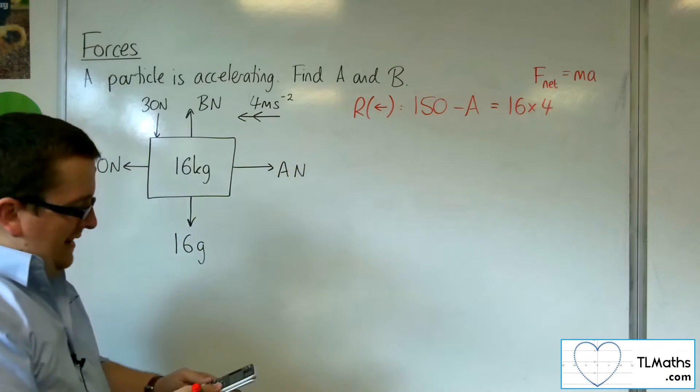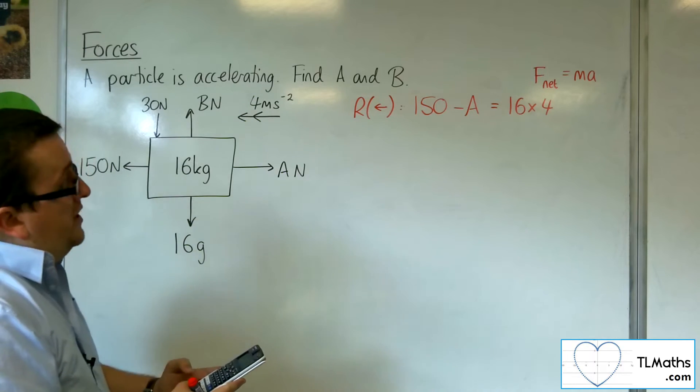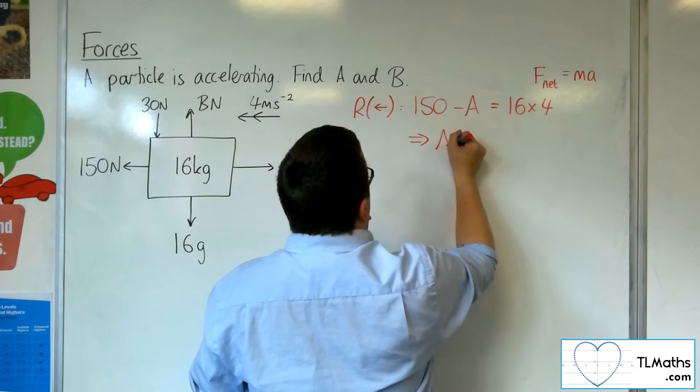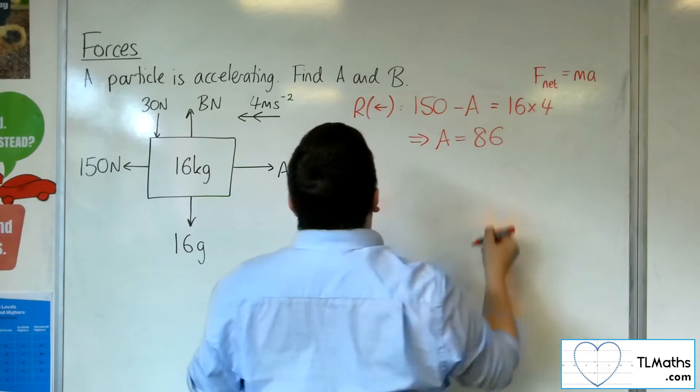So, A is going to be 150, take away 16 lots of 4, so that leaves you with 86, so A is 86 newtons.